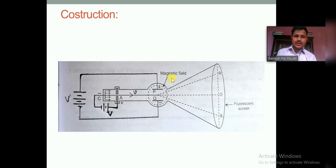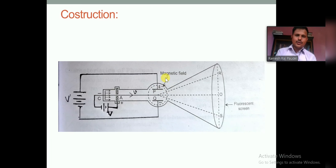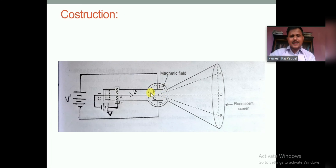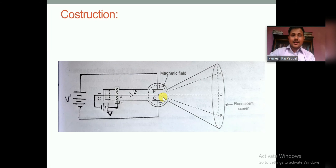When both electric and magnetic fields are absent, the electron beam moves in a straight line and strikes at the point O on the screen. When only the magnetic field is applied and the electric field is switched off, the electron beam coming from the cathode, accelerated by the potential, enters the magnetic field, follows a circular path, moves downward, and strikes at a spot on the fluorescent screen.